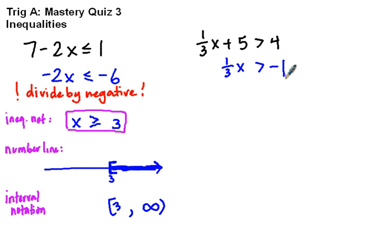Now I have 1/3 of x. You can divide both sides by 1/3, but the easiest way to do it is just to multiply by 3, because 1/3 times 3 is 1. So then I get x is bigger than negative 3. Again, that's part of our answer. That's the inequality notation.